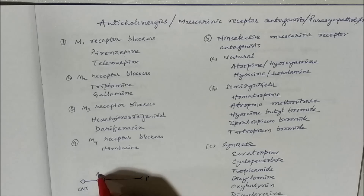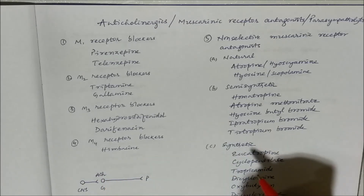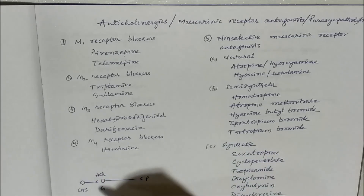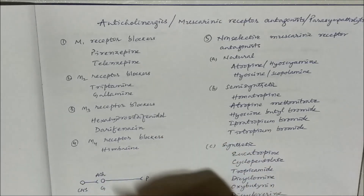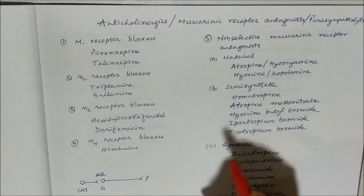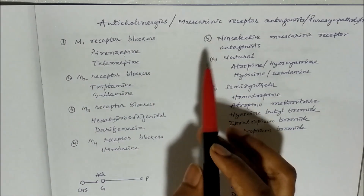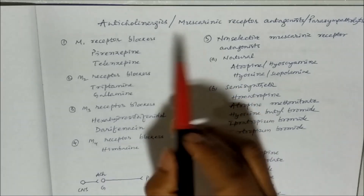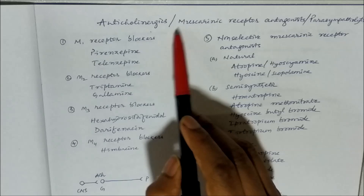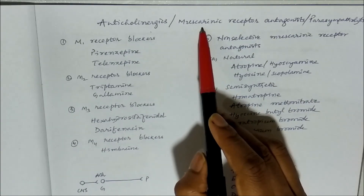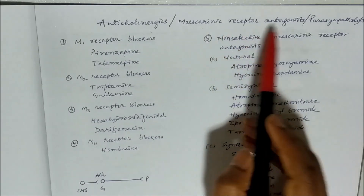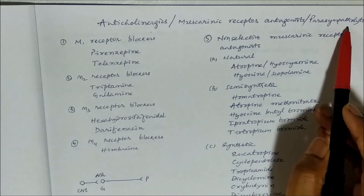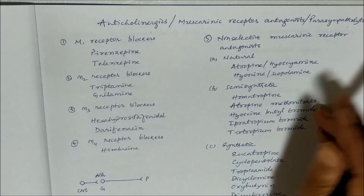And at ganglia, the neurotransmitter is acetylcholine. So if we use indirectly acting Anticholinergics, they will have action on the ganglion also. So we will restrict our discussion to only Anticholinergics, mainly as muscarinic receptor antagonists, or we can call them as parasympatholytics.